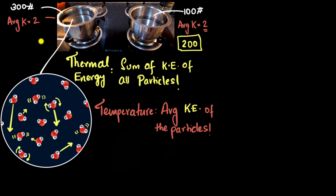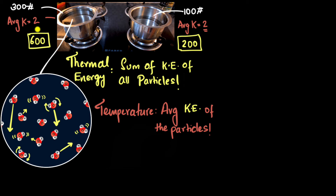What's the thermal energy in the larger vessel? Again, each molecule on average has 2 units of energy, but there are 300 molecules total, which means the total is 600 units of energy. Right in front of your eyes, you can see they have different thermal energy — the larger vessel has more thermal energy mainly because it has more particles — but look, they have the same temperature. So you can see they are not the same thing.